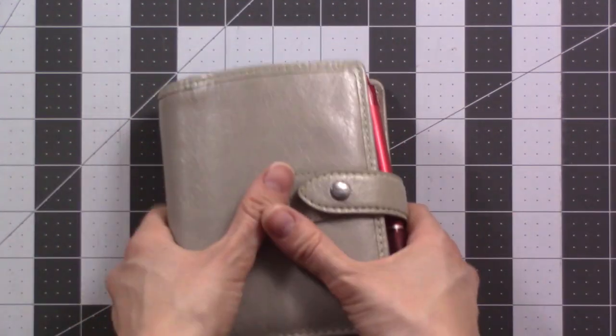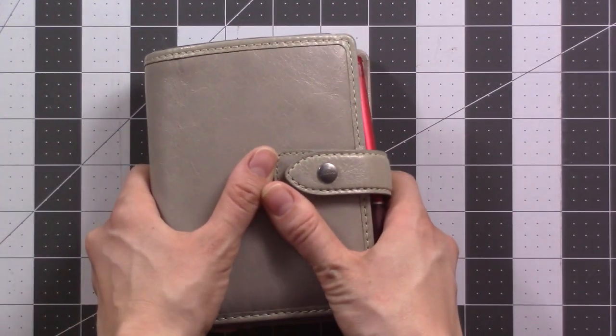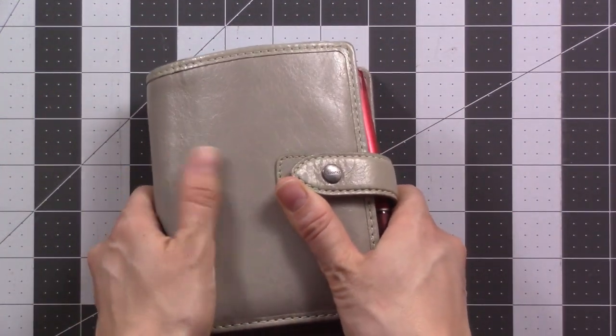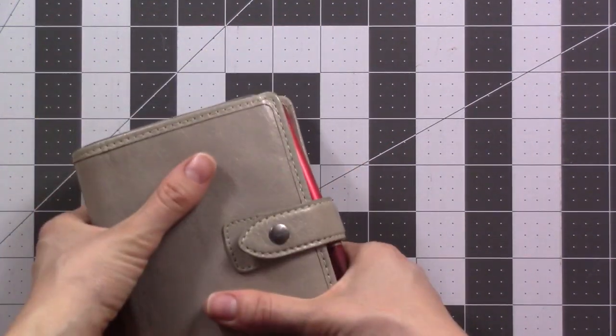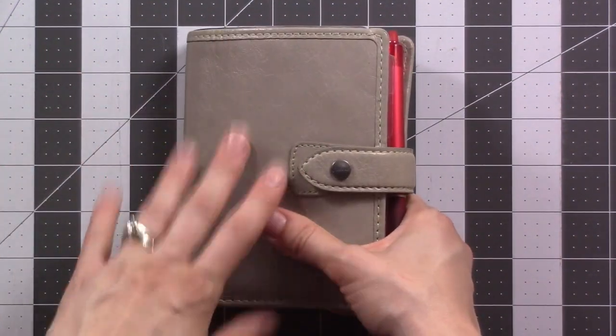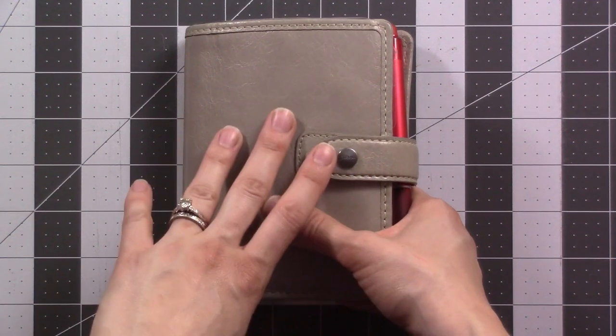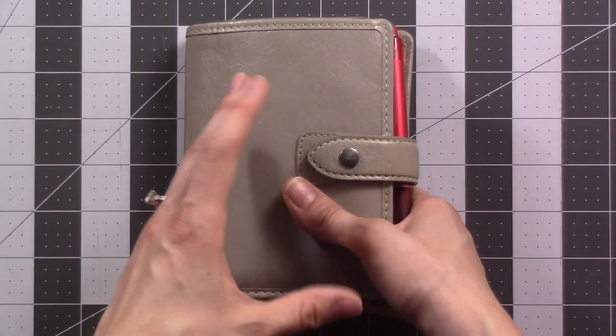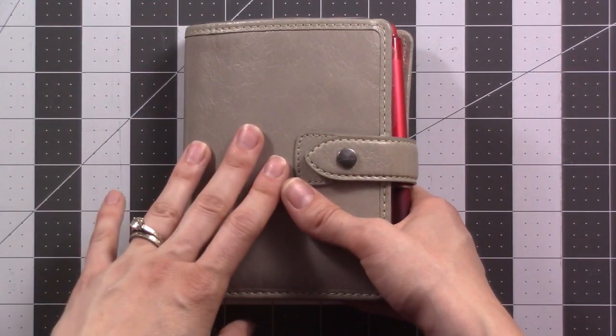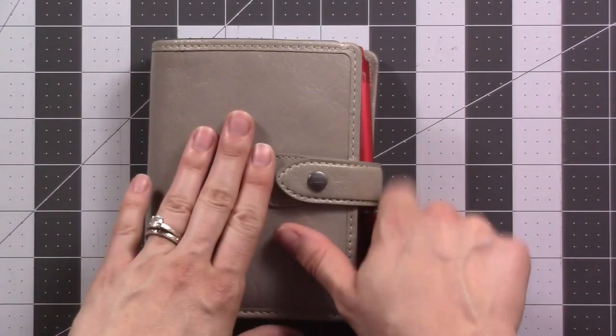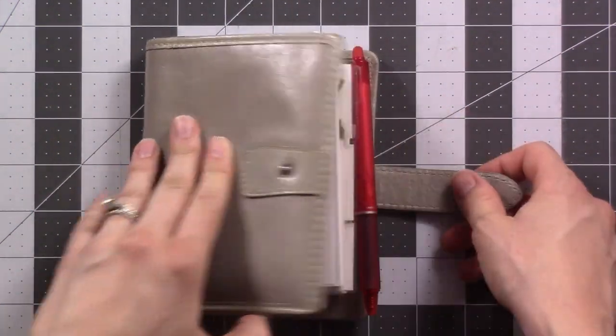I am back in my Filofax Malden color stone, size pocket. It feels really good to be back in here. Things just feel normal again. I think it was good for me to have a couple of weeks of trying out different things, but I feel at home in here and it's good. So let's take a look.